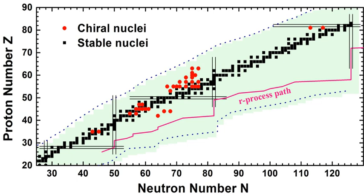After the neutron flux decreases, these highly unstable radioactive nuclei undergo a rapid succession of beta decays until they reach more stable, neutron rich nuclei.